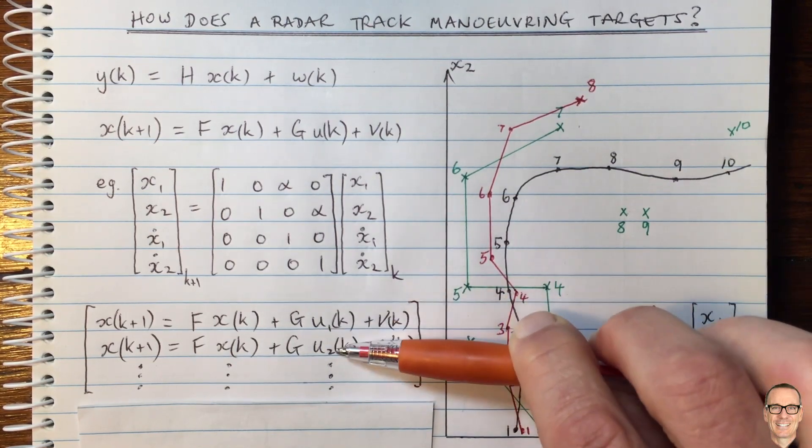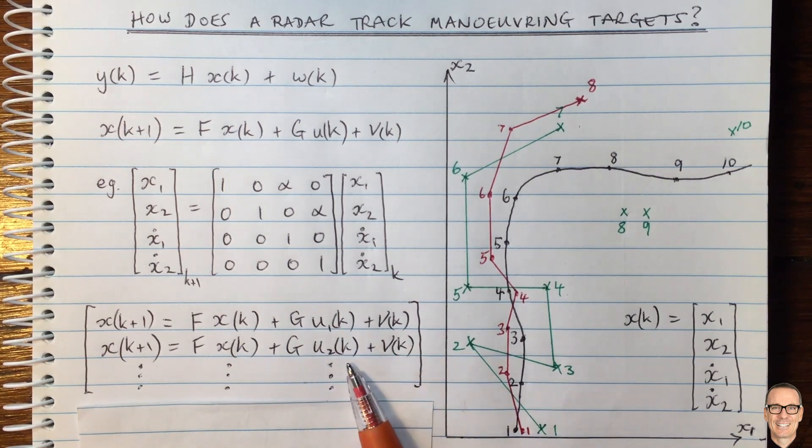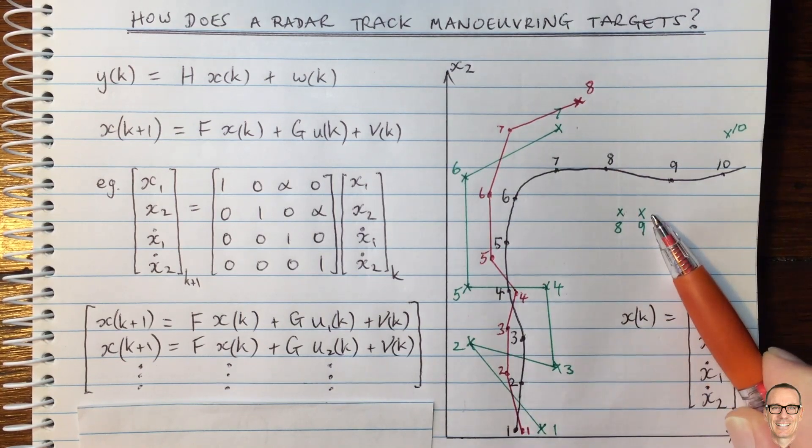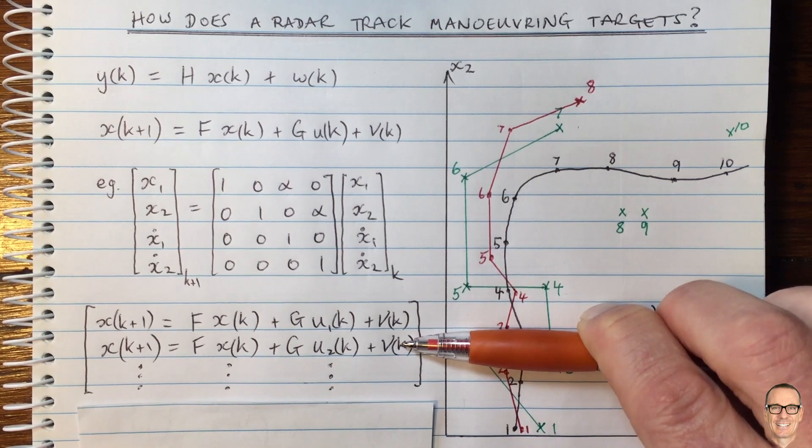And so we can run separate estimators, one for each of these maneuvering models, and then we can be making a judgment about which one we think is the one that matches best with the measurements. So this is a multi-model tracking algorithm, that would be a second approach.